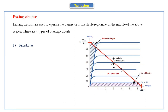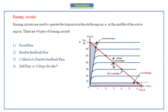There are four biasing techniques. The first one is fixed bias, the second is emitter feedback bias, the third is collector-to-emitter feedback bias, and the fourth is self-bias or voltage divider bias. Let's discuss them one by one. Today we will discuss fixed bias.